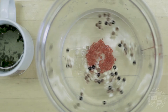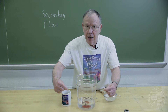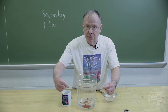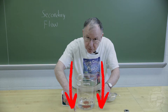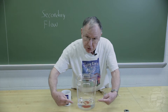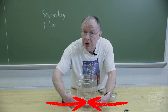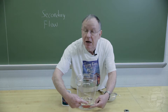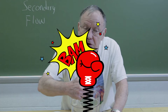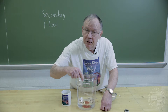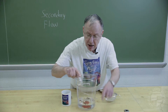Einstein's explanation: the water does get thrown to the outside on the top surface. It's got to go somewhere, so it goes down to the bottom. It's got to go somewhere, so it goes to the inside, picking up the red beads — the tea leaves — in the process. It's got to go somewhere, so it comes up to the center.